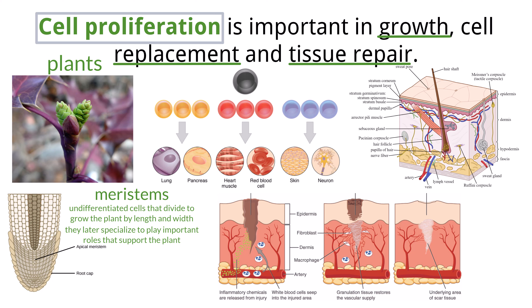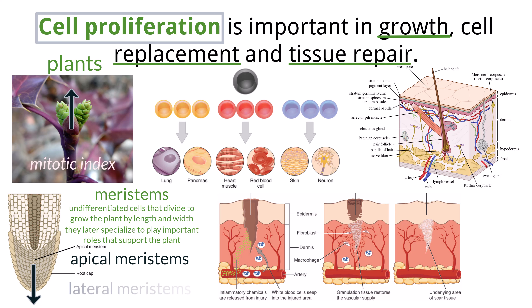There are two major types of meristemic tissue: apical and lateral. Apical meristemic tissue occurs in root tips and at the tips of stems, allowing plants to lengthen. Using a microscope, you will be able to see mitosis in the tips of roots and shoots. You can then calculate the mitotic index, which will be covered later in this presentation. Lateral meristemic tissue is seen in stem tissue and allows the cells to grow in width.